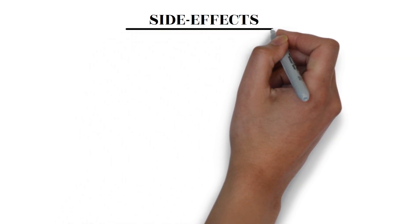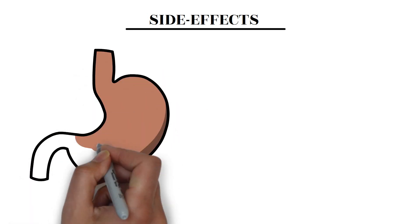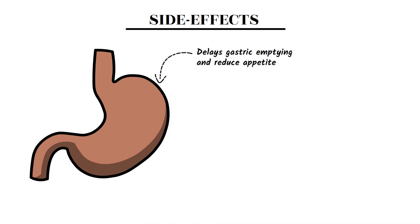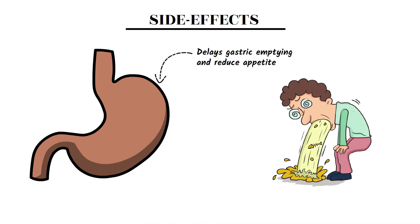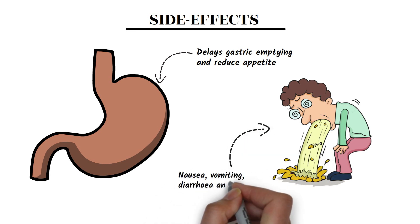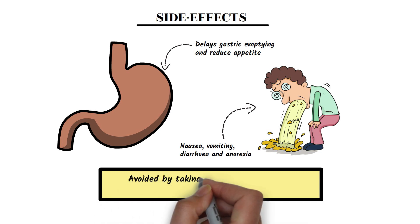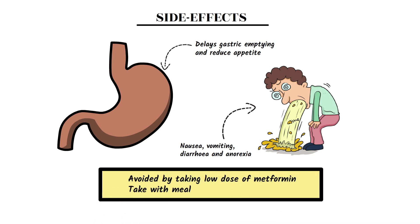As previously discussed, metformin delays gastric emptying and reduces appetite. The most common side effects include nausea, vomiting, diarrhea, and anorexia. These side effects can be avoided by taking a low dose of metformin or simply by taking it with a meal.